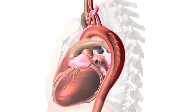The most common symptom of a dissection is sudden pain in the chest or back. Aortic disease is a term used for both aortic aneurysm and dissection.